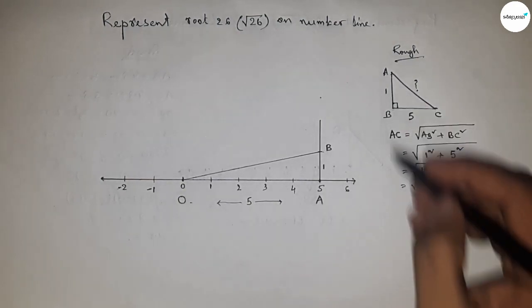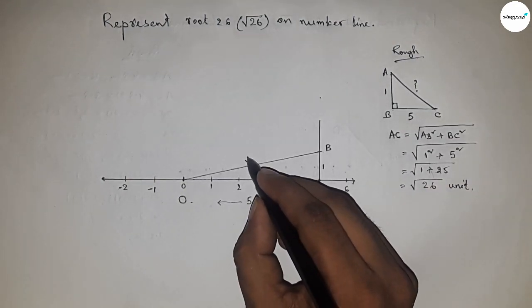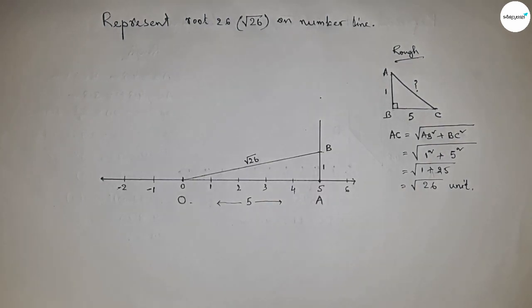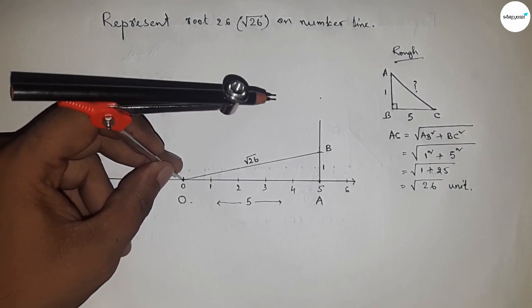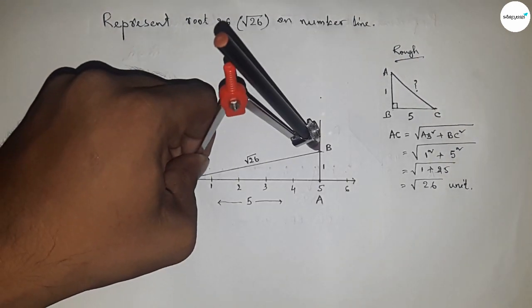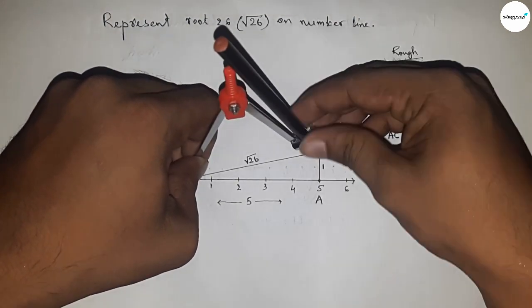So from this picture, we can say that OB is root 26. Now take length OB by compass to draw an arc.